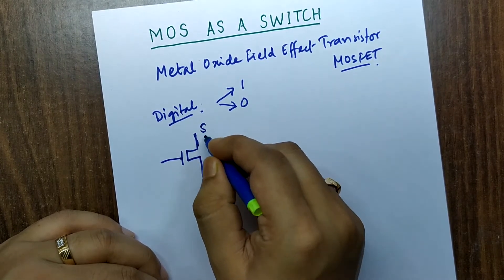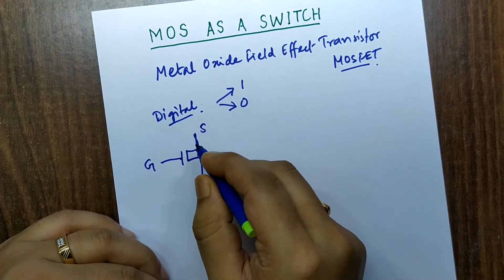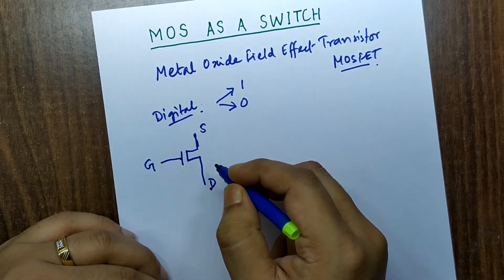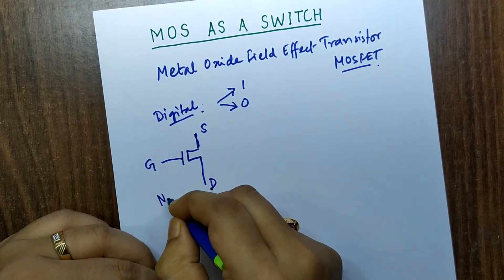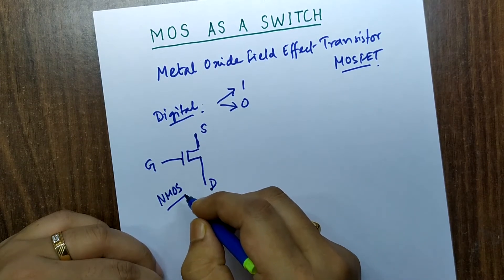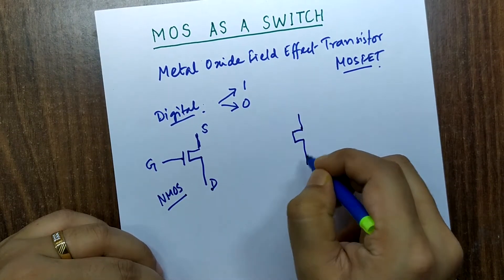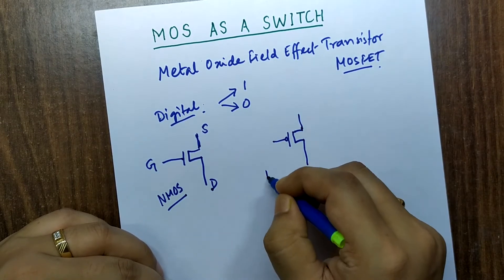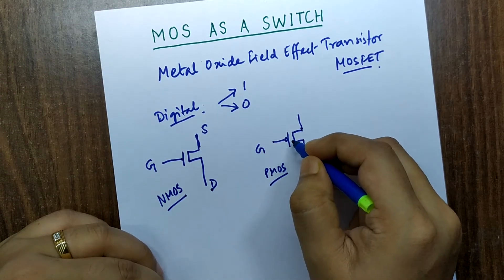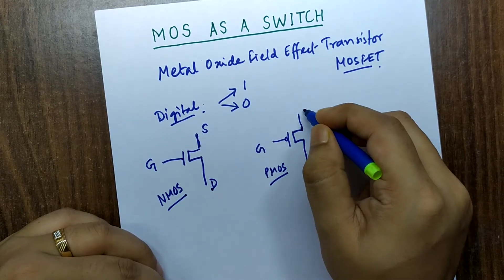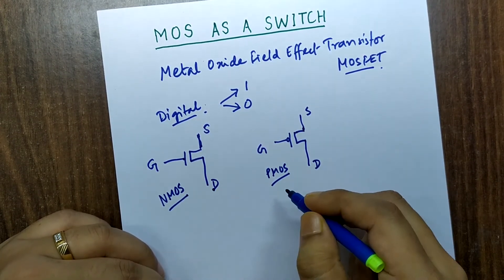A MOSFET always has three terminals: S for source, G for gate, and D for drain. If the majority carriers are electrons, it is called NMOS. If the majority carriers are holes, it is called PMOS. In the PMOS symbol, there is a bubble on the gate terminal; otherwise the remaining terminals stay the same.